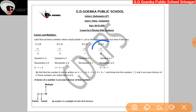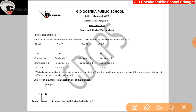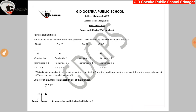When we divide 4 by 4, we get quotient as 1 and remainder as 0, and this way we can write 4 is equal to 4 into 1. So we find that number 4 can be written as 1 into 4, 2 into 2, and 4 into 1, and the numbers 1, 2, and 4 are exact divisors of 4. So these numbers — 1, 2, and 4 — are called the factors of 4. A factor of a number is an exact divisor of that number.